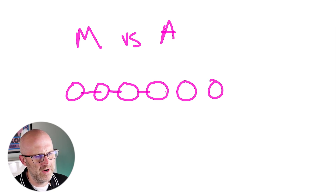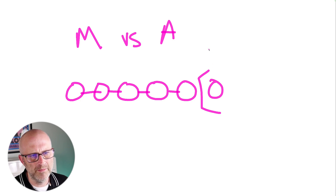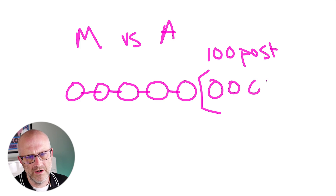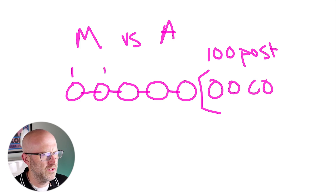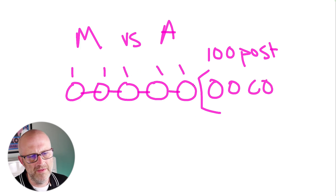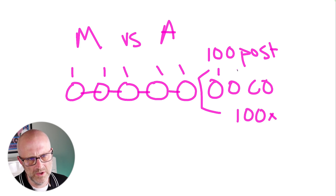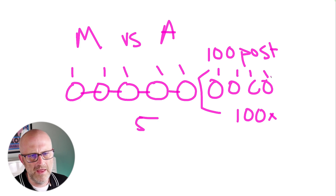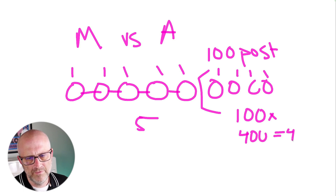Make.com charges you for every operation that is run in your scenario. So if you've got a loop going through 100 posts and you have a few modules — let's say five modules before the loop and four modules inside the loop — that's five operations plus four times a hundred, giving us 405 operations total for this automation.